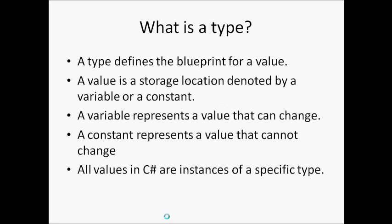So, what is a type? A type defines the blueprint for a value. A value is a storage location denoted by a variable or a constant. A variable represents a value that can change. A constant represents a value that cannot change. All values in C-Sharp are instances of a specific type.